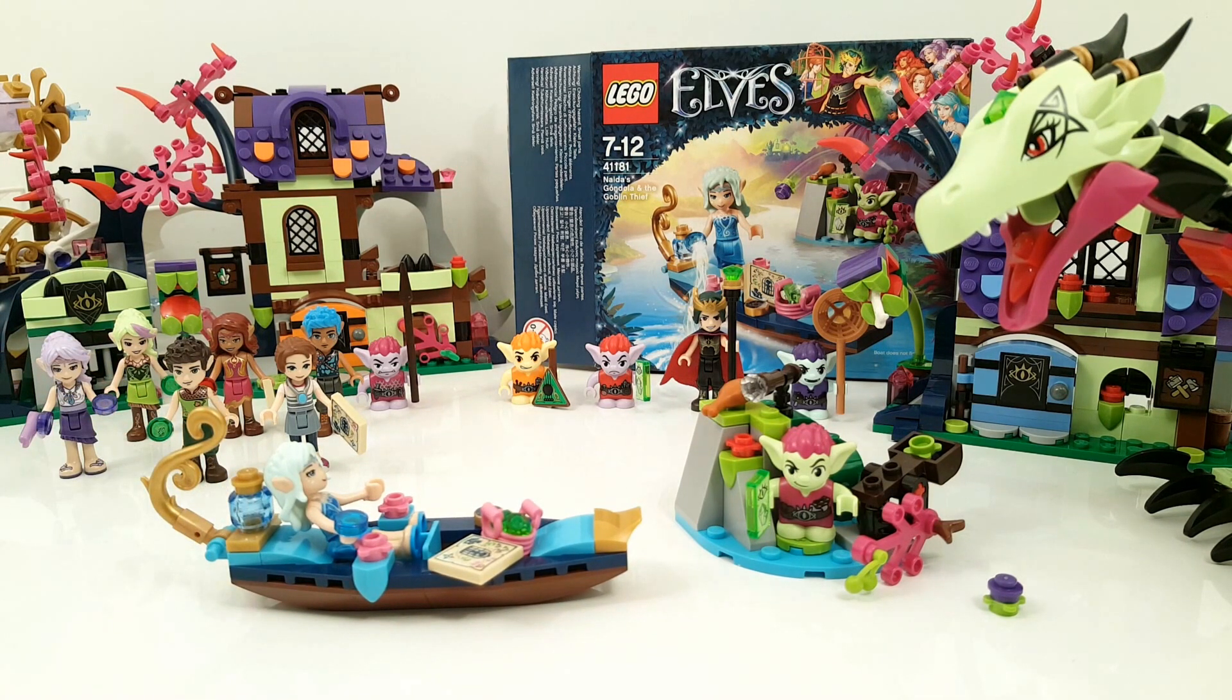It's a smaller set of these sets that came now for 2017 of LEGO Elves, but I think it's still a cute set. It comes directly from the webisodes. In the webisodes like I said, the Goblin King tricks Emily Jones to go with him in the Gondola onto the river to get the amulet.